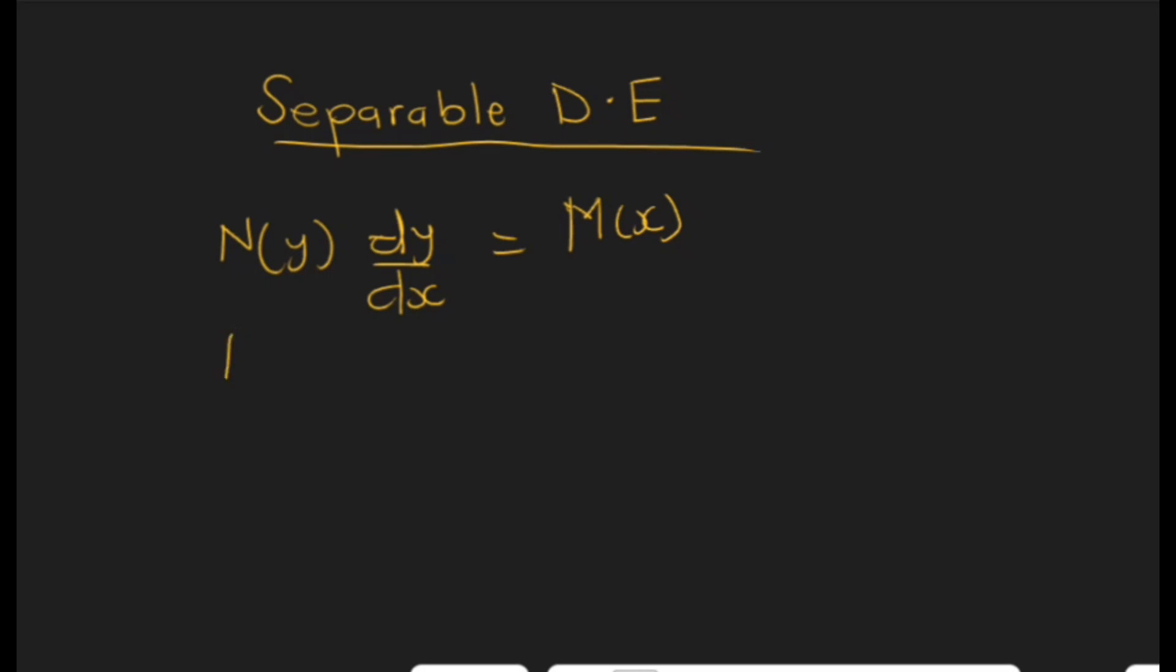We are going to get N(y) dy. Then I will multiply my dx to this side to give me M(x) dx.